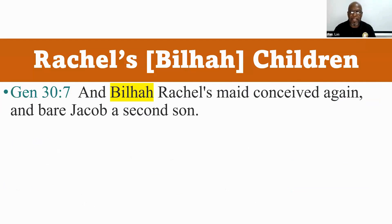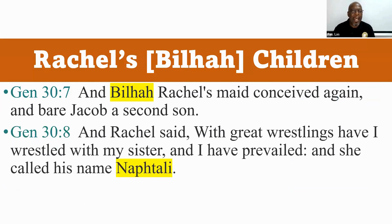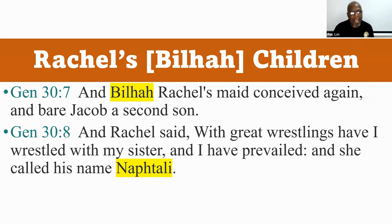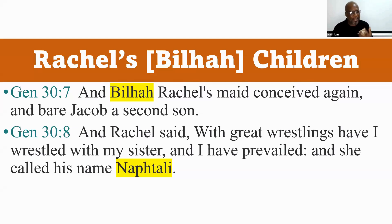And Bilhah, Rachel's maid, conceived again and bore Jacob a second son. And Rachel said, 'With great wrestlings have I wrestled with my sister, and I have prevailed,' and she called his name Naphtali. She's not the one having the children — Bilhah is having the children — and she's still focused on her sister, like, 'Sister, I'm having children now,' even though they are not directly hers, but they are hers.